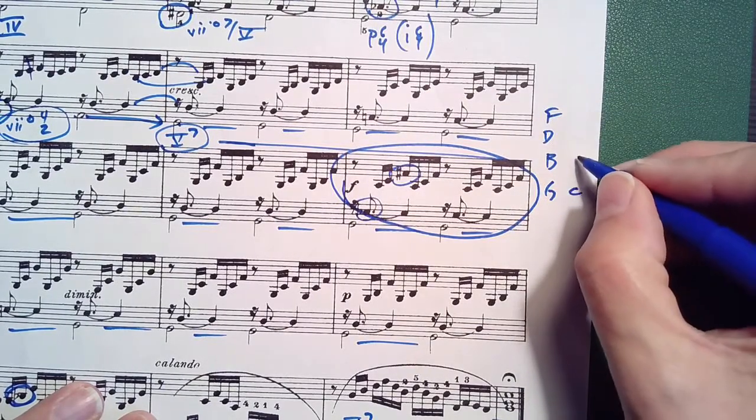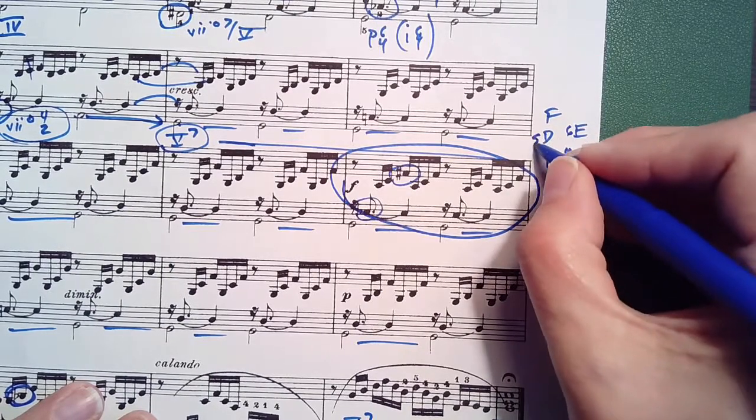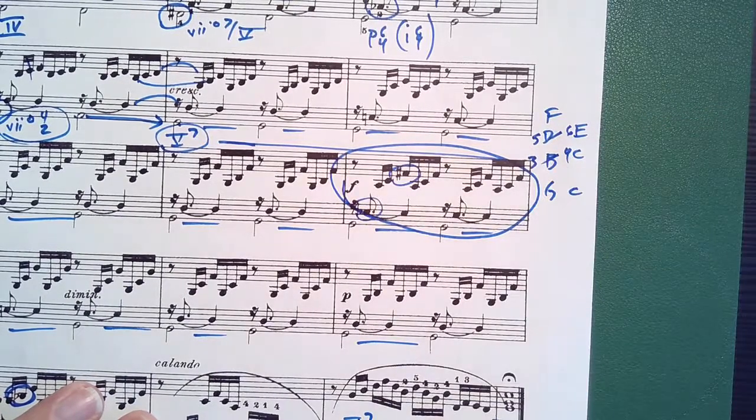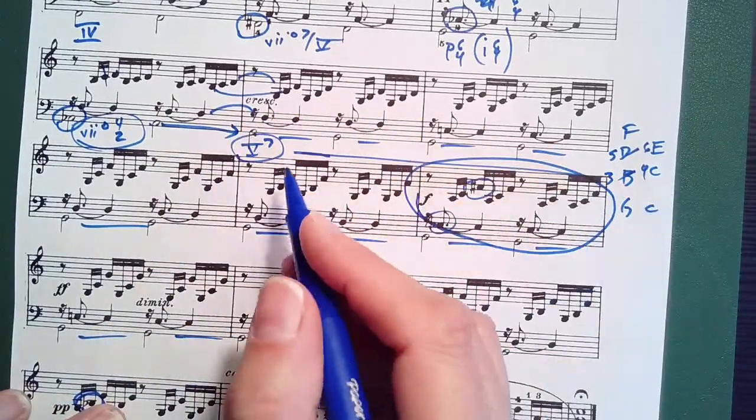We could have G, C, E, which is our six four embellishing the five three. And you can see that we have various versions of that here.